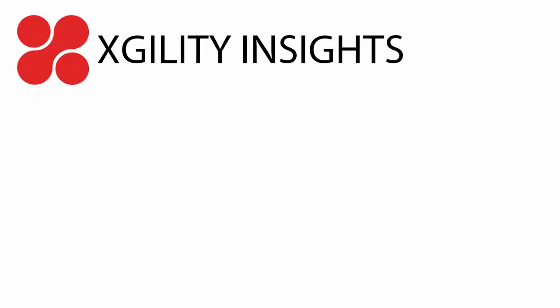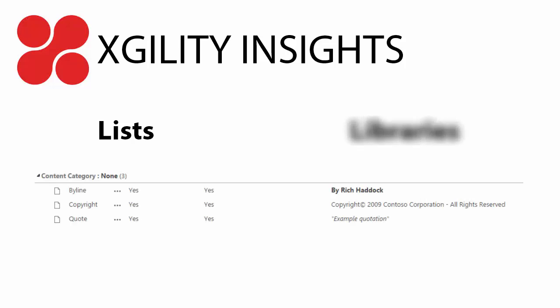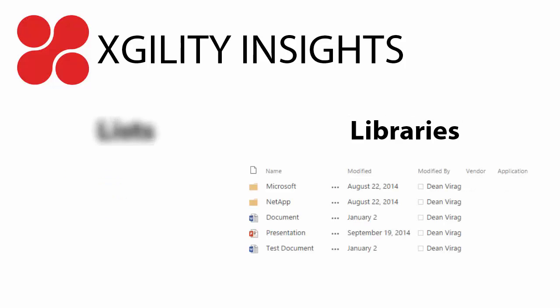SharePoint stores content in repositories called lists and libraries. Lists store columns and rows of data, very similar to a spreadsheet, while libraries store files and information about those files called metadata.